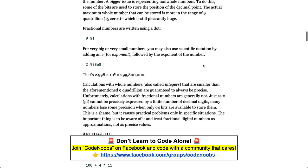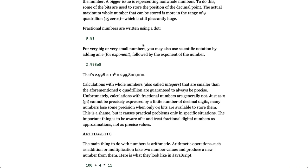Fractional numbers are written using a dot. For very big or very small numbers, you may also use scientific notation by adding an E for exponent followed by the exponent of the number. That's 2.98 times 10 to the 8th or 299,800,000.